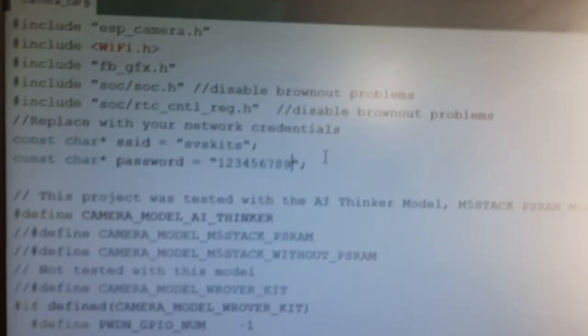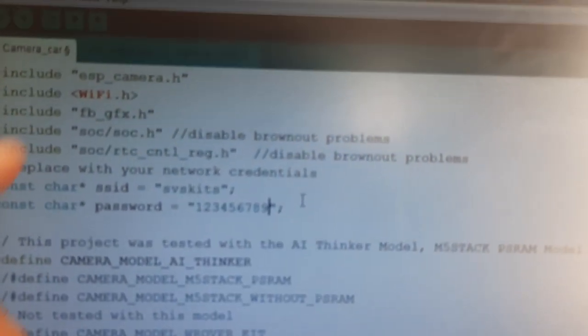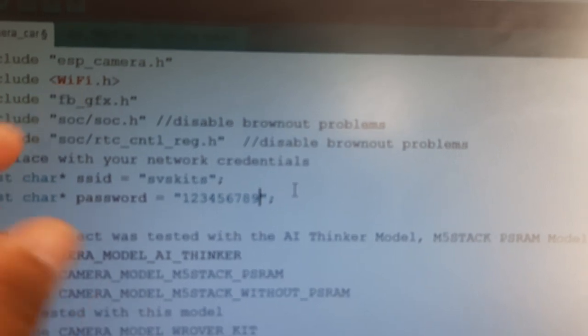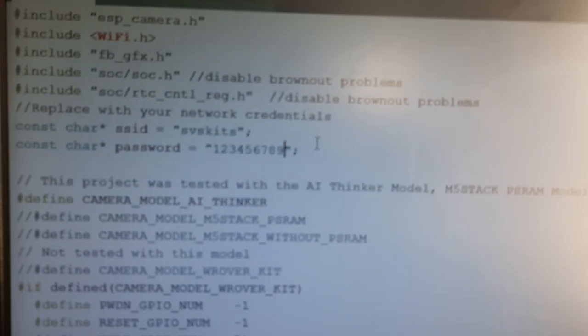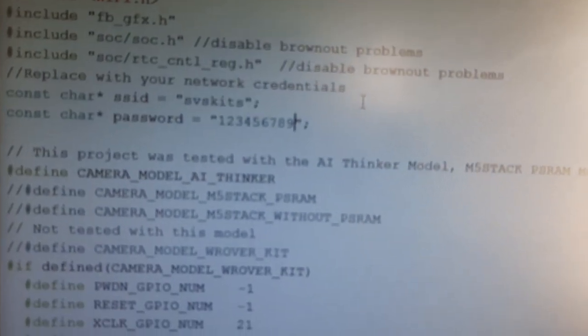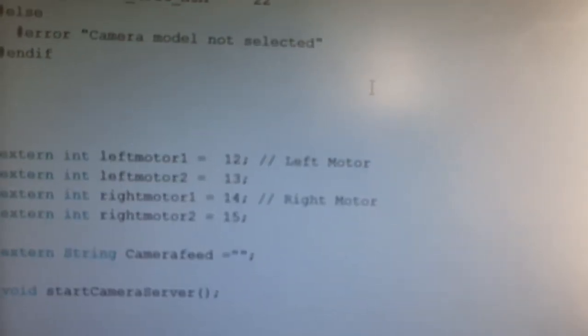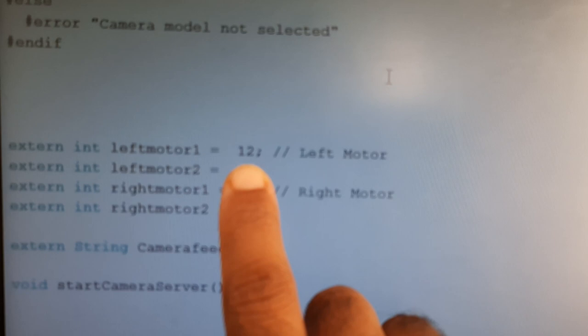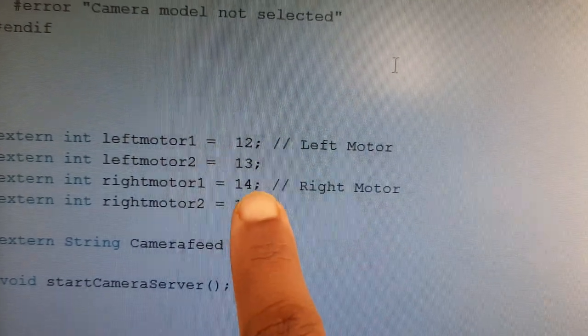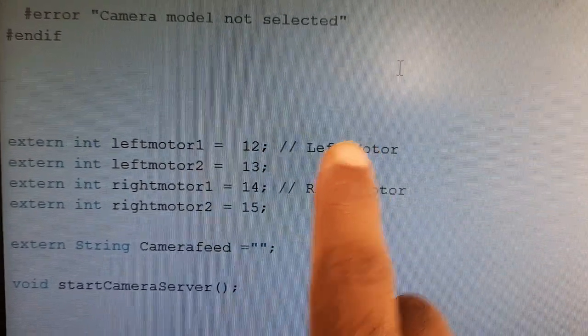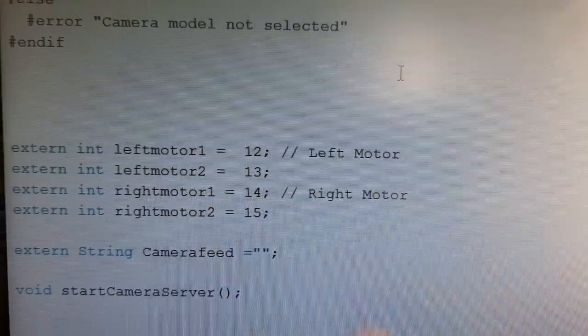This is my programming part with ESP camera.h, Wi-Fi, SSID and password. My motor connections are GPIO 12, 13, 14, 15. GPIO 12, 13 for left motor, GPIO 14, 15 for right motor.